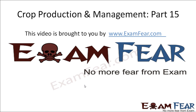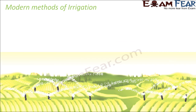Hello friends, this video on crop production and management part 15 is brought to you by examfear.com — no more fear from exams. Because of these advantages, modern methods of irrigation came up. There are two methods being used: the sprinkler system and the drip system.